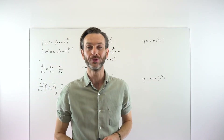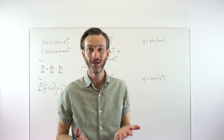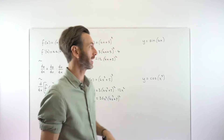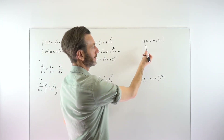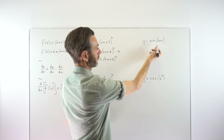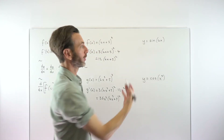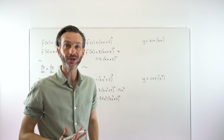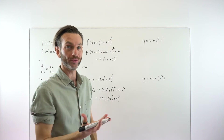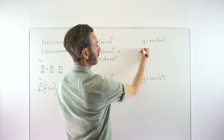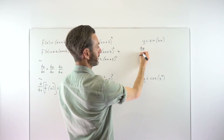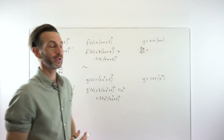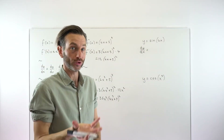If you only take one thing from this video, just take that the chain rule is generally massively overcomplicated — it's just two derivatives multiplied together. So let's apply this to y equals sine(4x). Again you've got a composite function: sine is the outside function, 4x is the inside function. The derivative of the outside function, sine, is just cosine.